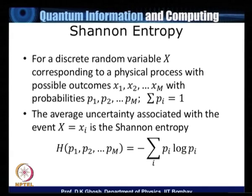In the last lecture we talked about Shannon entropy, which is basically a classical information system that tells me what is the optimal compression that I can get. To summarize, supposing we have a random variable X corresponding to a physical process with possible outcomes x1, x2 up to xM with respective probabilities p1, p2 up to pM, subject to the sum over probabilities being equal to 1.